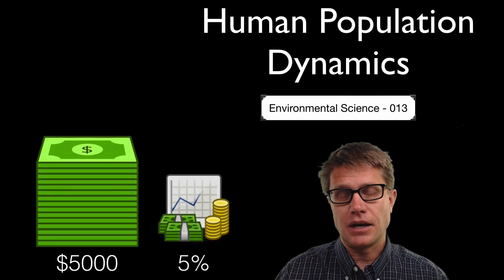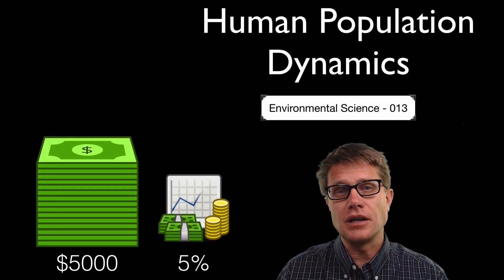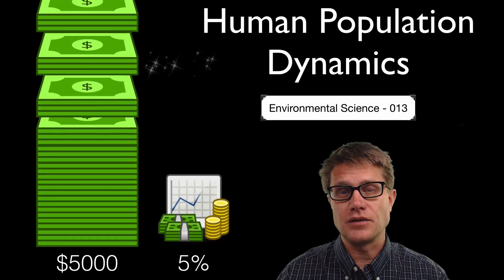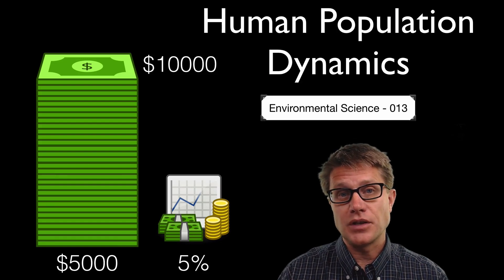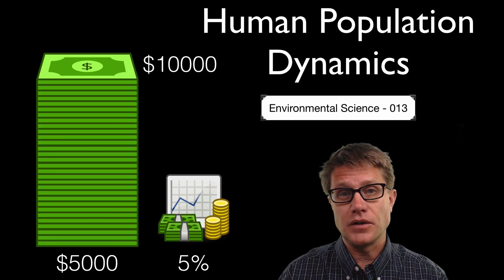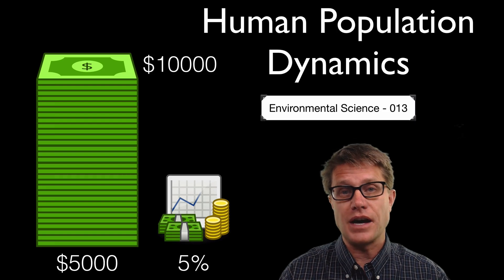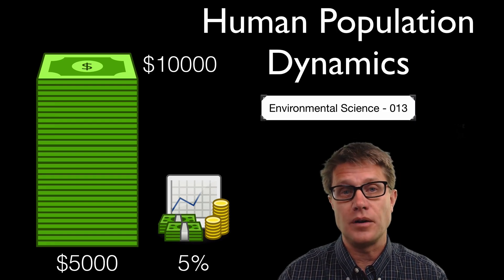Imagine you had $5,000 in the bank at 5% interest rate. How long would it take you to double your money to $10,000? Well you would have to go year by year. So it would be 5,000 times 5% which gives you $250 in the first year. We would then have to take 5% of that and 5% of that. It is a really hard problem.